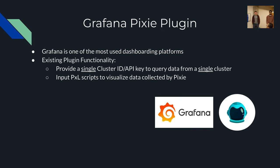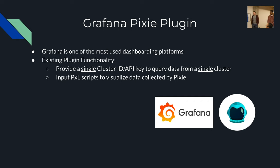So what is the Grafana Pixie plugin? This plugin allows Pixie to act as a data source, to send data to Grafana and visualize that data on Grafana's UI. Grafana is one of the most used dashboarding services on the market, and having Pixie as a data source would generally improve Pixie's use in that field. The existing plugin functionality provides a single cluster ID and an API key to query data from a single cluster on Pixie, and users would have to input Pixel scripts to visualize that data.